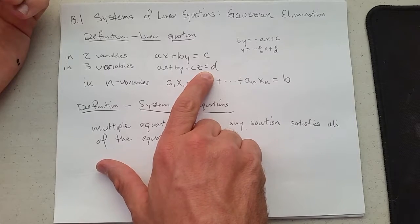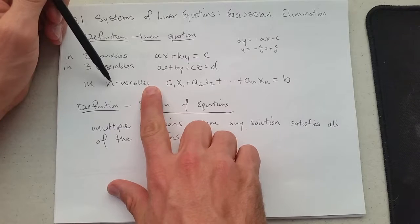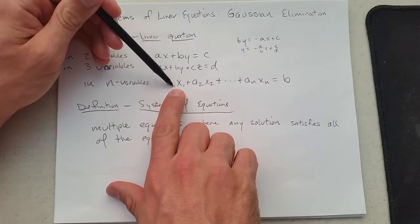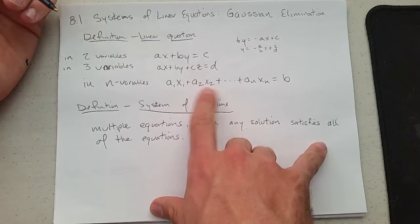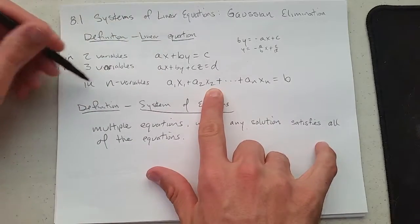And if we have n variables, and if n is a larger number, what we do is use subscripts. So the first constant, we'll put a subscript of one. The first variable is subscript of one. Second variable subscript of two. Second constant subscript of two. And how many do we have? We have n.